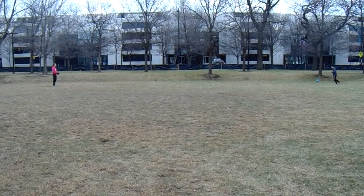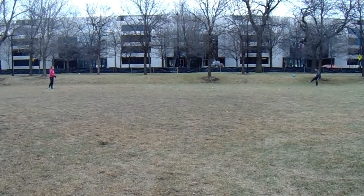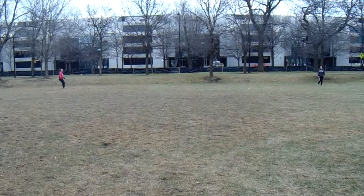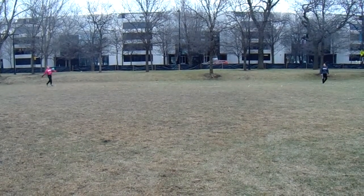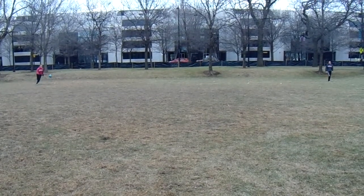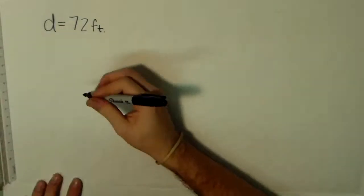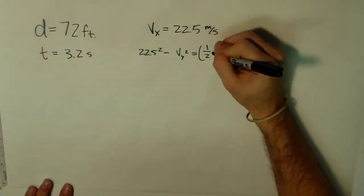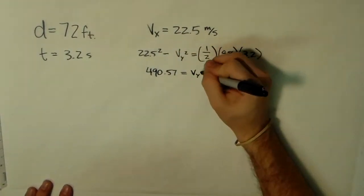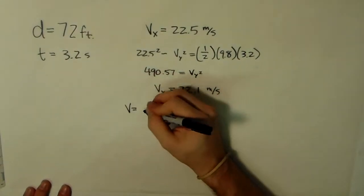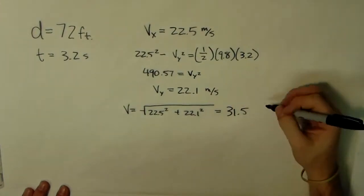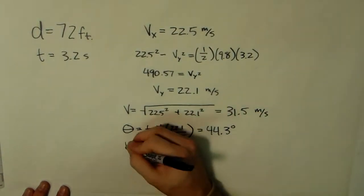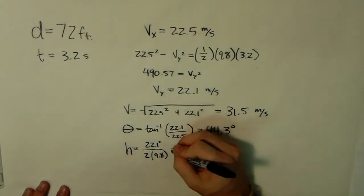When looking at the path the ball takes after being kicked, you are really considering its trajectory — the path a moving object follows through space as a function of time. Trajectory is determined by horizontal speed, vertical speed, height, and angle of elevation. The ball was kicked a total distance of 72 feet over 3.2 seconds, giving a horizontal speed of 22.5 meters per second. The ball's vertical speed was found to be 22.1 meters per second, and taking the square root of the sum of the squared horizontal and vertical velocities, the ball's total velocity was 31.5 meters per second. The ball reached an apex height of 24.9 feet at an angle of elevation of 44.5 degrees.